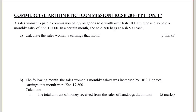Hello and welcome. Let's solve this question on commercial arithmetic. KCC 2010, paper 1, question number 17. A saleswoman is paid a commission of 2% on goods sold worth over $100,000. She is also paid a monthly salary of $12,000. In a certain month, she sold 360 bags at $500 each. Part A: calculate the saleswoman's earnings that month.